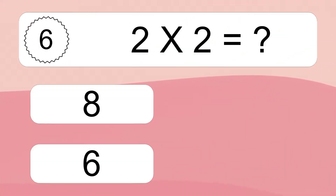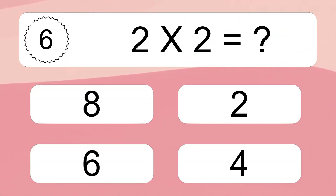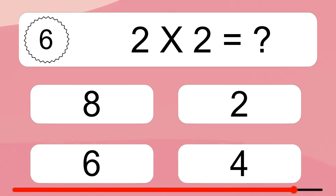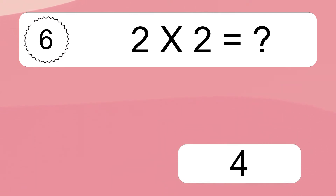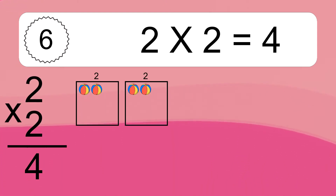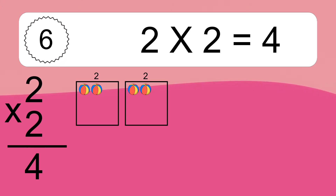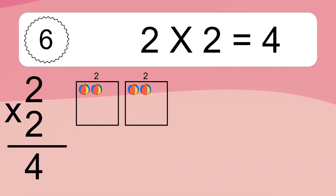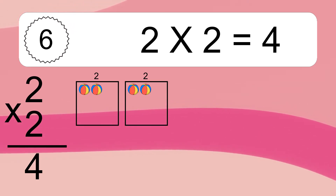Two times two equals what? Two times two equals four. We have two boxes, and each box has two colorful balls inside. If you count all the balls in all the boxes together, you will have two times two balls. This equals four balls.